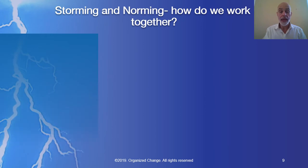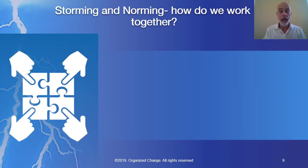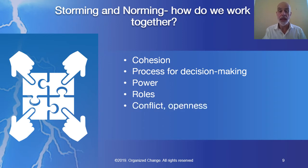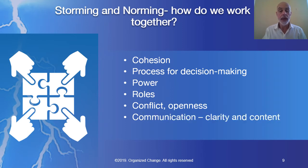In the storming and norming phase, we ask the question: how do we work together? Aspects include how much cohesion there needs to be in the group, what process there should be for decision making, how much power people on the board should have, what kind of roles and relationships people on the board should have, how conflict and openness should be handled, how much communication and the clarity of communication, and lastly, explicitly or otherwise, what measures of success should we have.